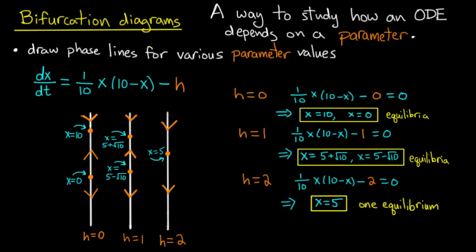And where do I get all this information? Well, I set h equal to 2 in the right-hand side of this equation, and I get 1/10 x times 10 minus x minus 2 equals 0. There's only one root to that equation, that's x equals 5. And I can test that this quantity is negative for x greater than 5 and negative for x less than 5.